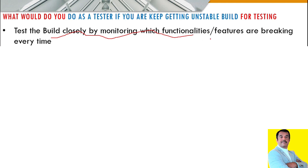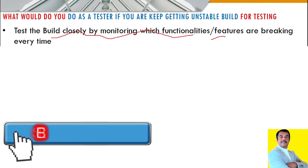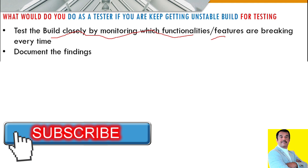If you are getting unstable builds most of the time, the first thing you should do as a tester is test those builds by working closely with them and find out which functionalities or features are really breaking every time you receive a build for testing.